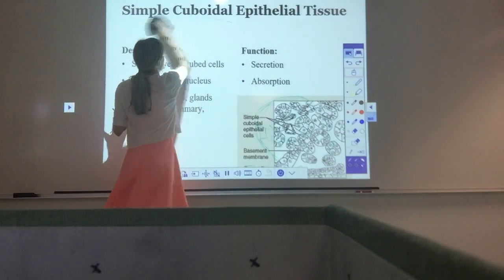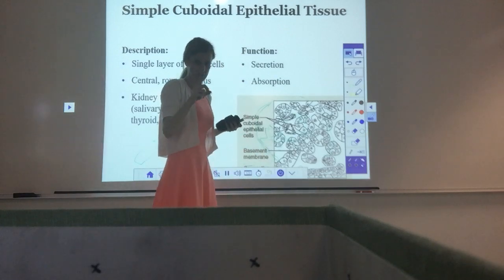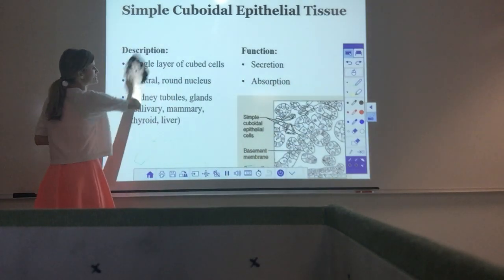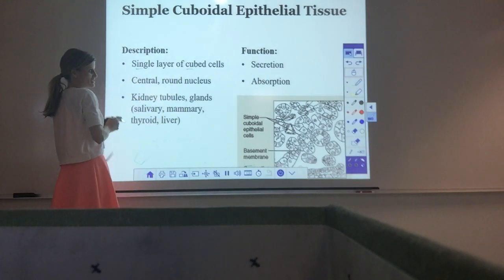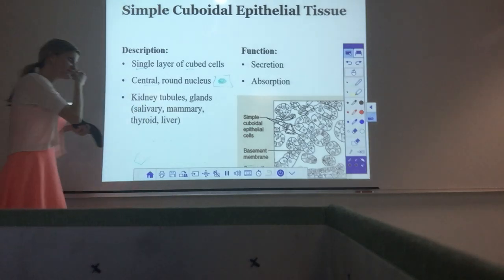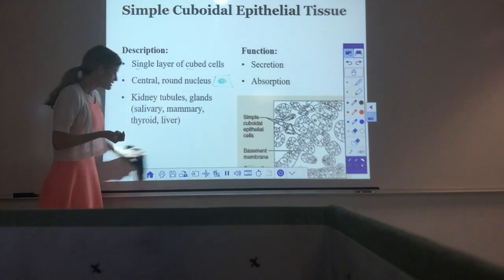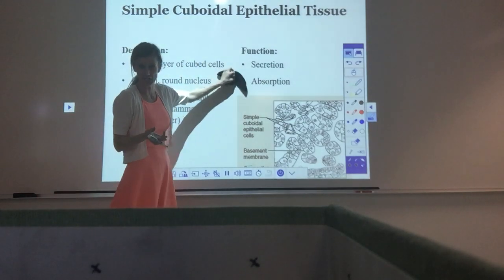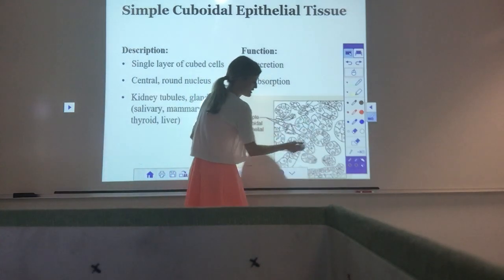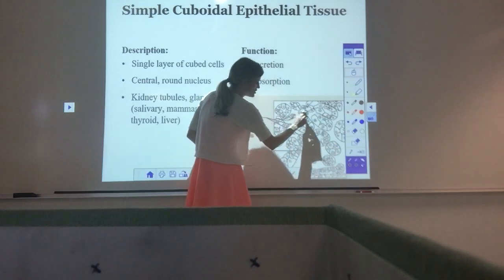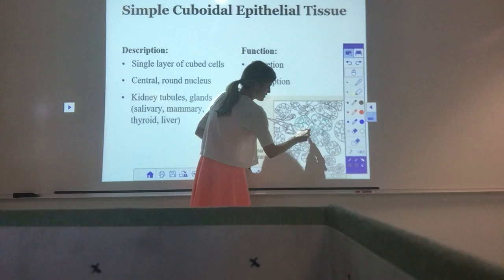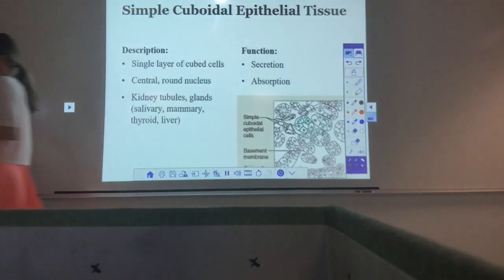The next type is simple cuboidal epithelial tissue. Simple means one layer of cells, cuboidal means the cells are cube-shaped — square with the nucleus nicely centered right in the middle. It lines an open area. We see these in parts of the kidney tubules and in some glands like the thyroid and salivary glands, because they're good for secretion — secreting saliva or thyroid hormones.